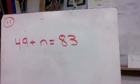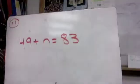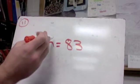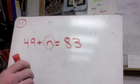Starting about pretty simple with this first one here, 49 plus n equals 83. Our goal is to get this by itself on one side of the equal sign.